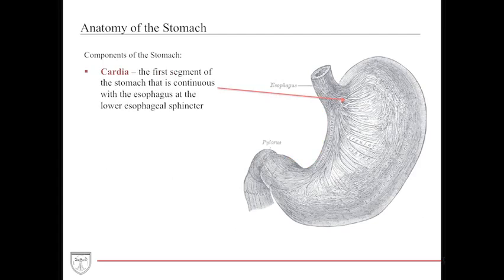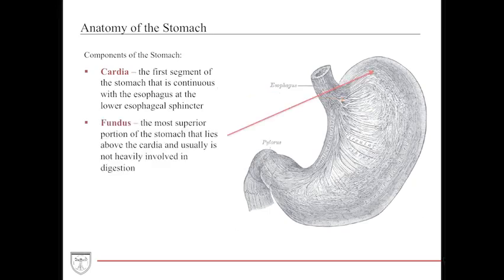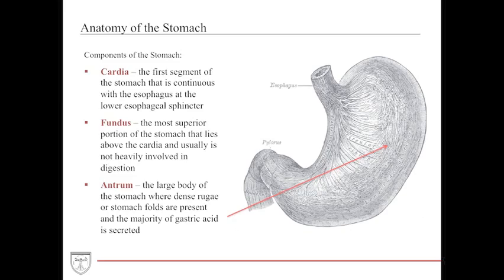The components of the stomach begin with the cardia, which is continuous with the esophagus at the lower esophageal sphincter and is a very short segment. The next section is the fundus, the most superior portion of the stomach, lying above the cardia with almost no significant role in digestion. The largest and most important portion is the antrum.